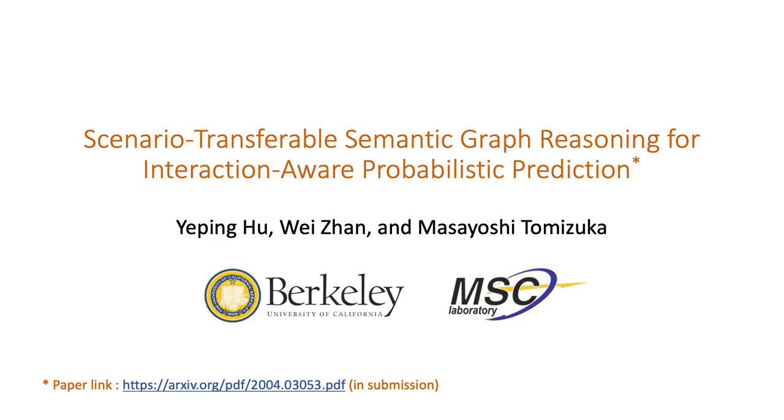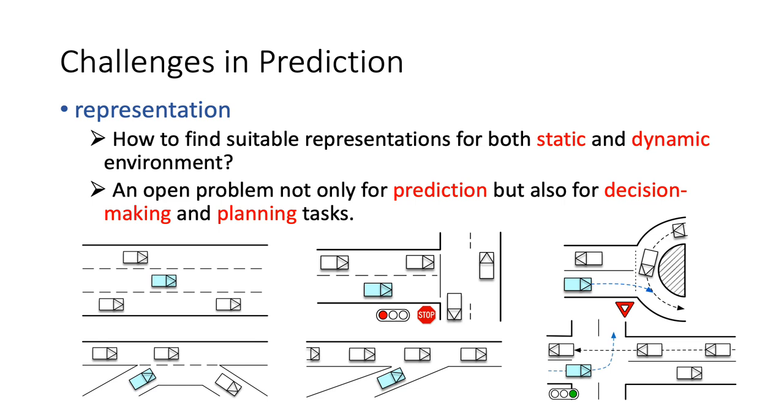There are many unsolved challenges in prediction algorithms for autonomous vehicles, and one of them is to find comprehensive and generic representations for all common scenarios that can be encountered in the real world.